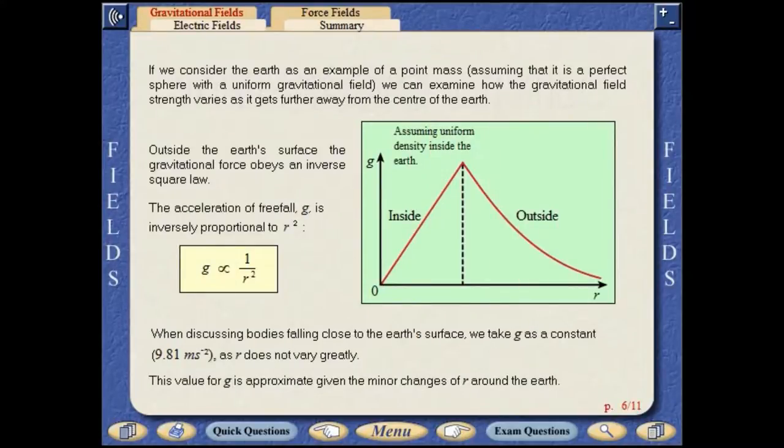If we consider the Earth as an example of a point mass, assuming that it is a perfect sphere with a uniform gravitational field, we can examine how the gravitational field strength varies as it gets further away from the centre of the Earth.